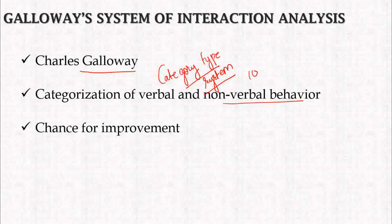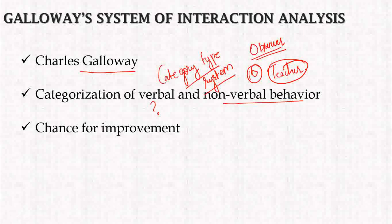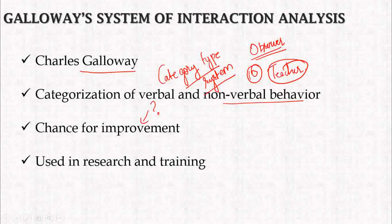There are 10 categories totally in this interaction analysis. The teacher's verbal and non-verbal behavior is observed, and the observer will note it according to the 10 categories by recording the category number. This is used to identify areas of improvement for the teacher. The Galloway System is used in research and training, where the teacher will be observed by an observer.